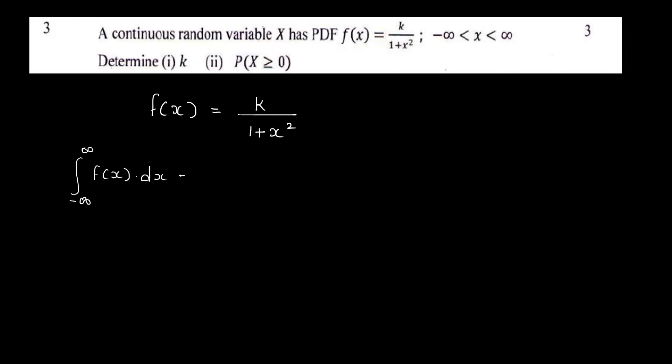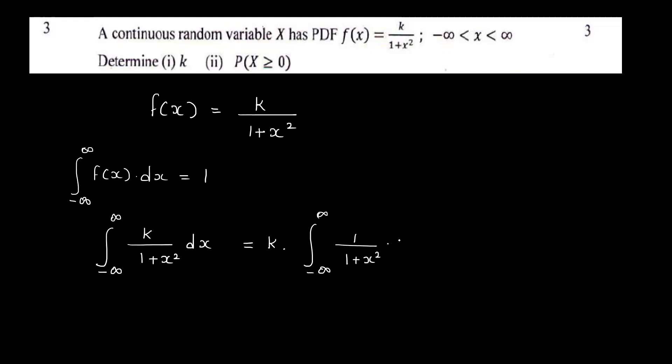Using the normalization condition, the integral of f of x dx must equal 1. That is k times the integral from minus infinity to infinity of 1 by 1 plus x squared dx. The integral of 1 by 1 plus x squared dx is tan inverse x. So we have k into tan inverse x, with limits from minus infinity to infinity.